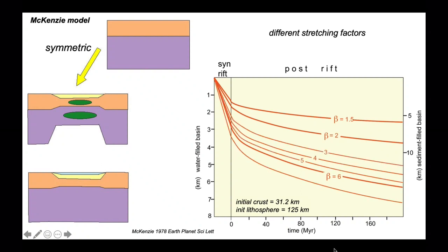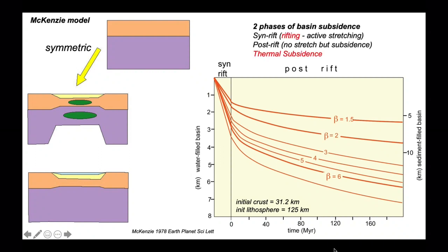We can add curves for other stretching factors as well. The important part of this model is that we have a two-phase basin subsidence model: syn-rift, where there's active stretching going on, and post-rift, where there's no more stretching but subsidence continues because of thermal re-equilibration of the upper mantle.